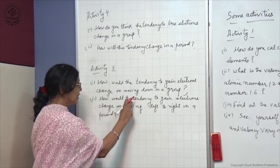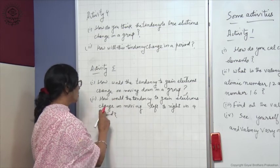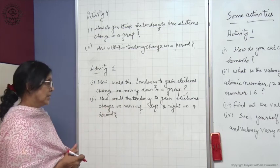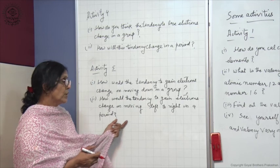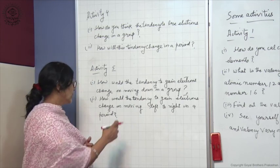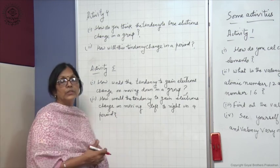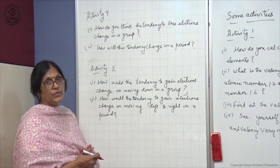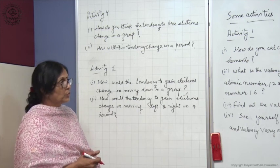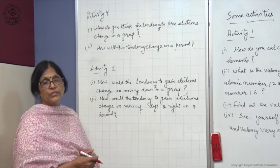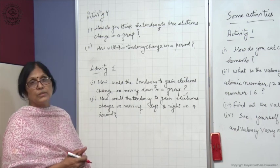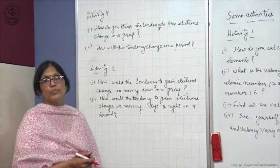And how does the tendency to gain electrons change on moving left to right in a period? The tendency to gain electrons increases on moving left to right in a period. Perform these activities yourself to learn more about the periodic table without needing to memorize.